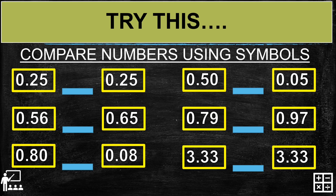I will show you my answer and compare with your answer. 25 hundredths and 25 hundredths are the same number, so we are going to use the equal to symbol. Next, 56 hundredths and 65 hundredths — 56 hundredths is lower than 65 hundredths, so we are going to use less than.